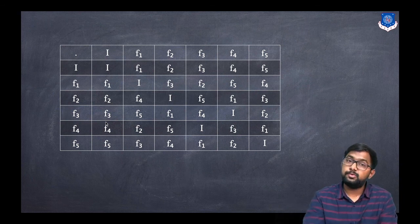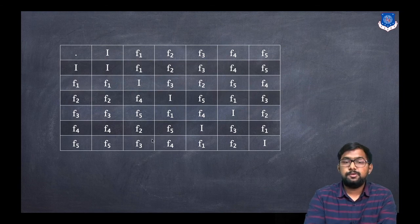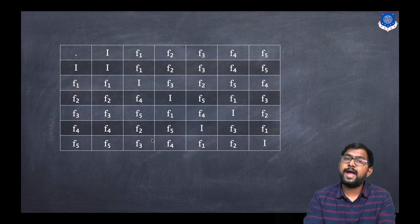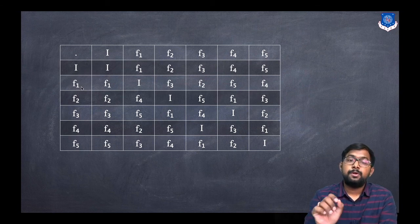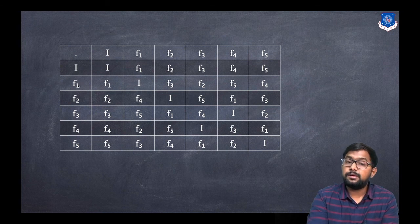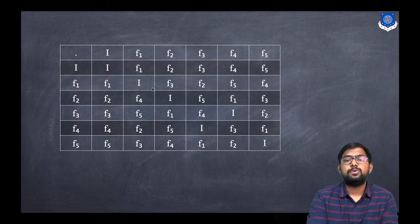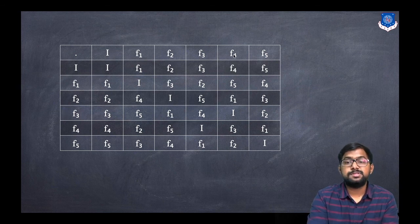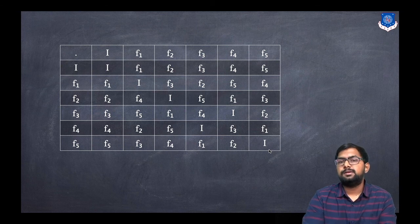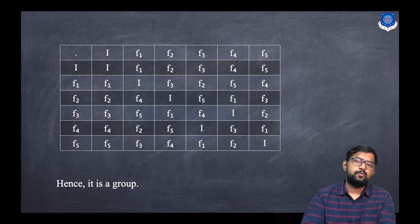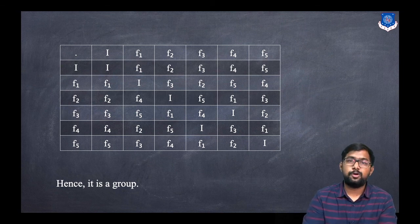For the inverse property, we need each element composed with its inverse to give i. From the table: i ∘ i = i, so i is its own inverse; f1 ∘ f1 = i, so f1 is its own inverse; f2 ∘ f2 = i, so f2 is its own inverse; f3's inverse is f4; f4's inverse is f3; and f5 ∘ f5 = i, so f5 is its own inverse. All inverses exist, so all group axioms are satisfied. Hence P3 is a permutation group.